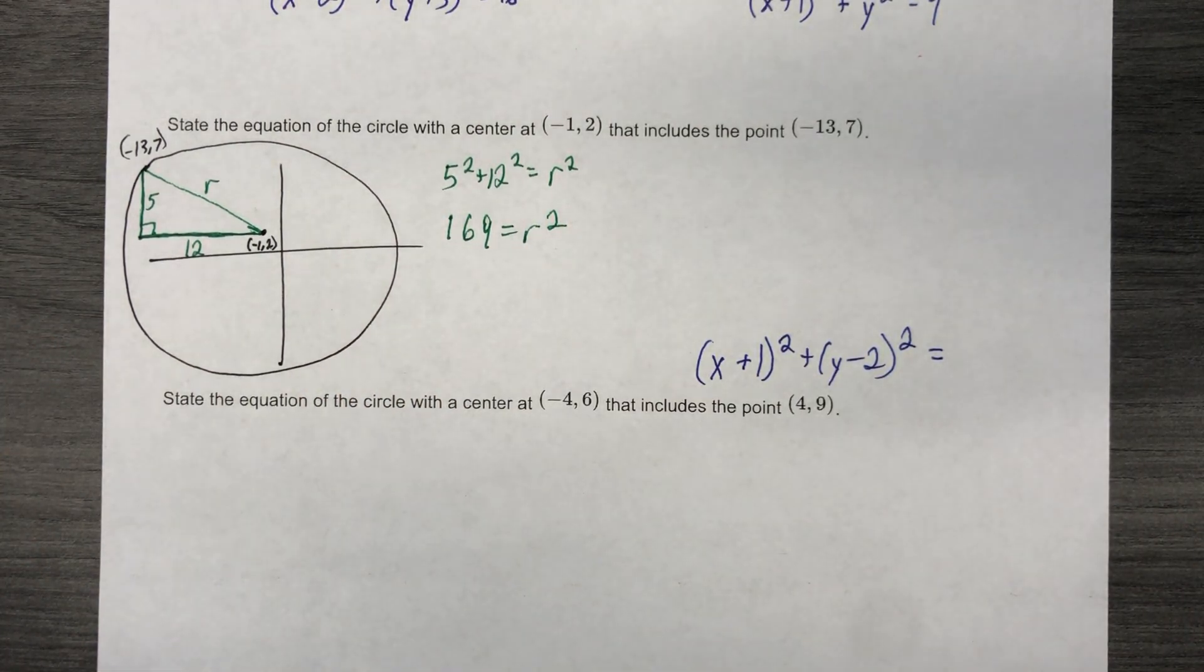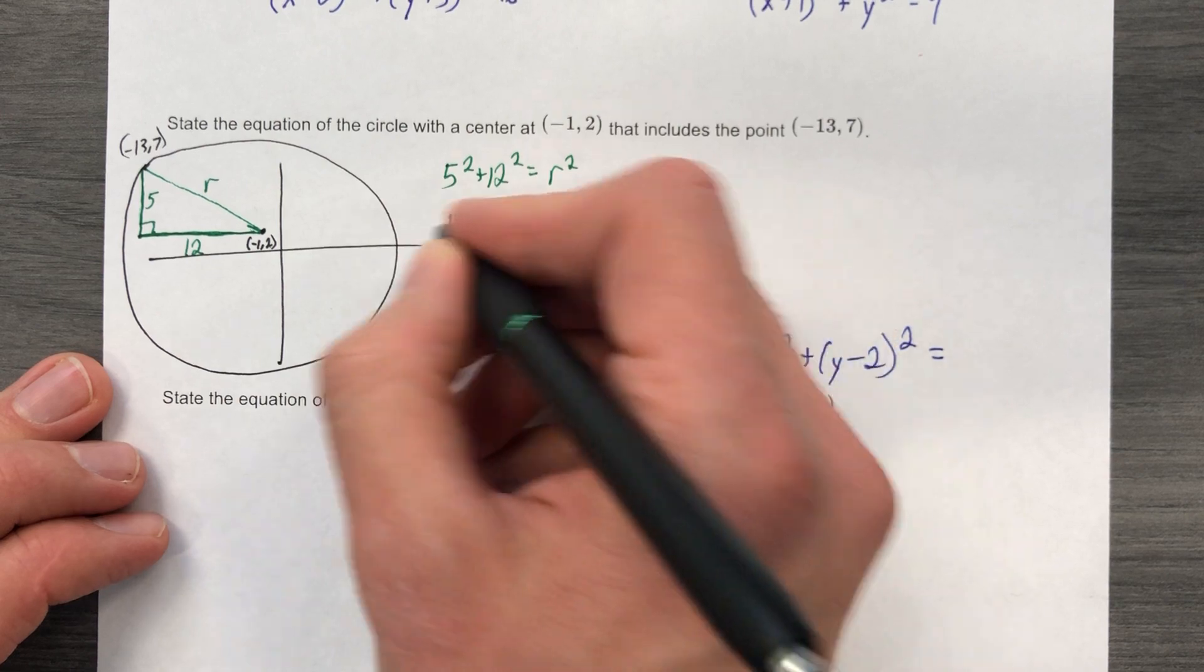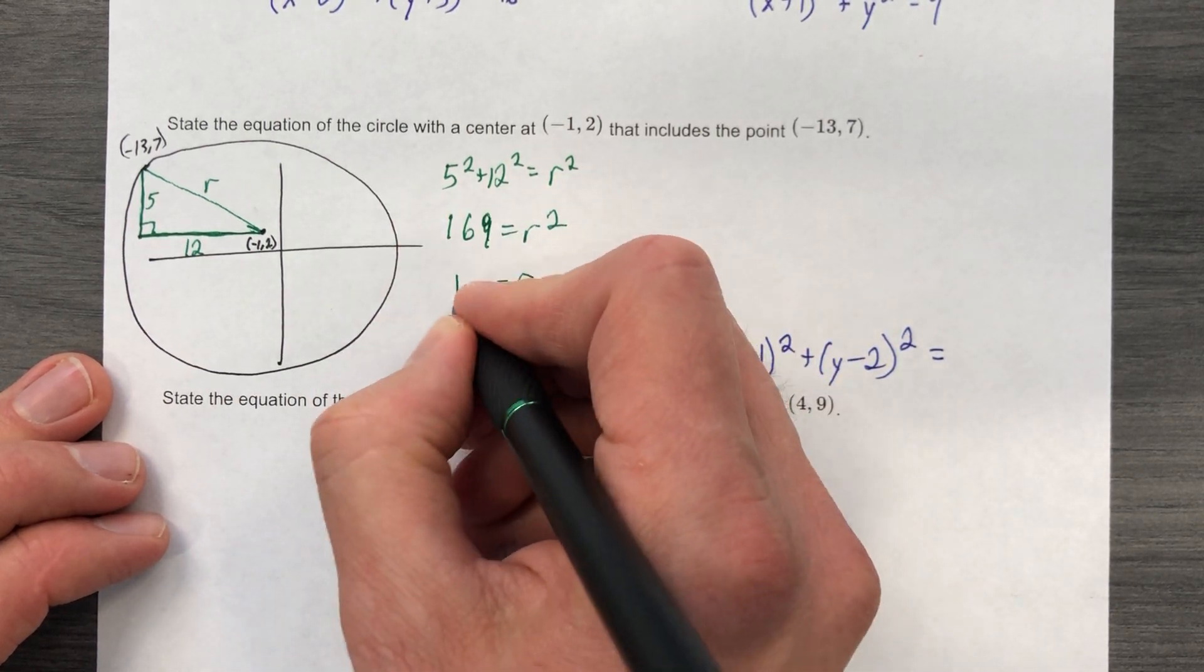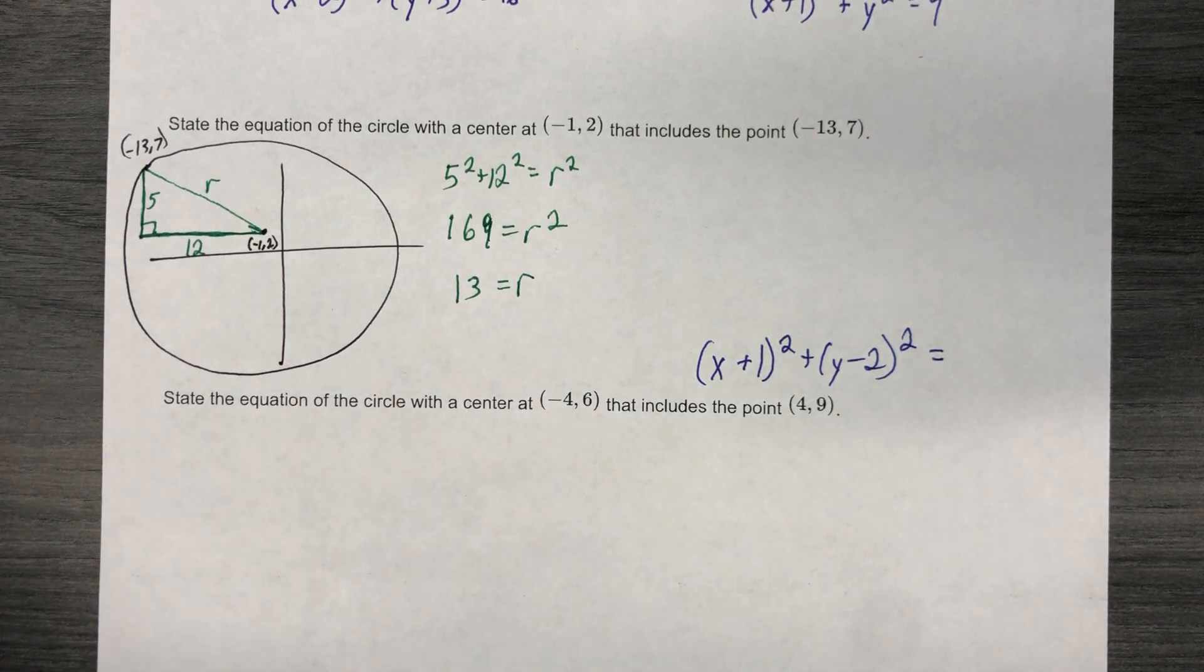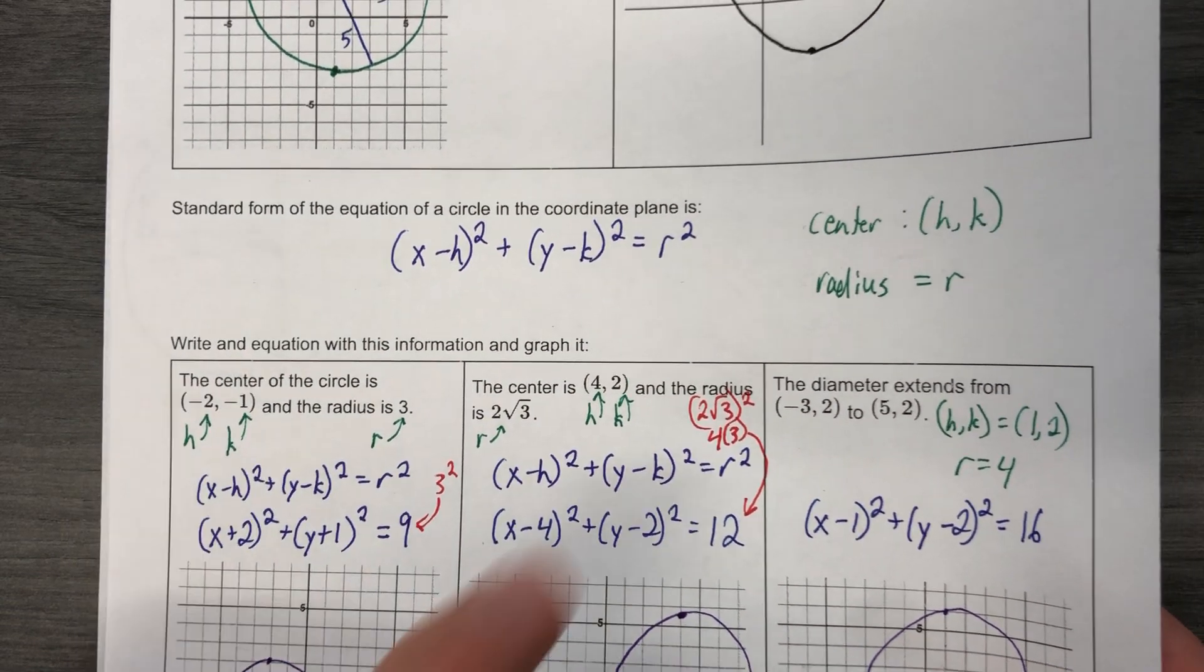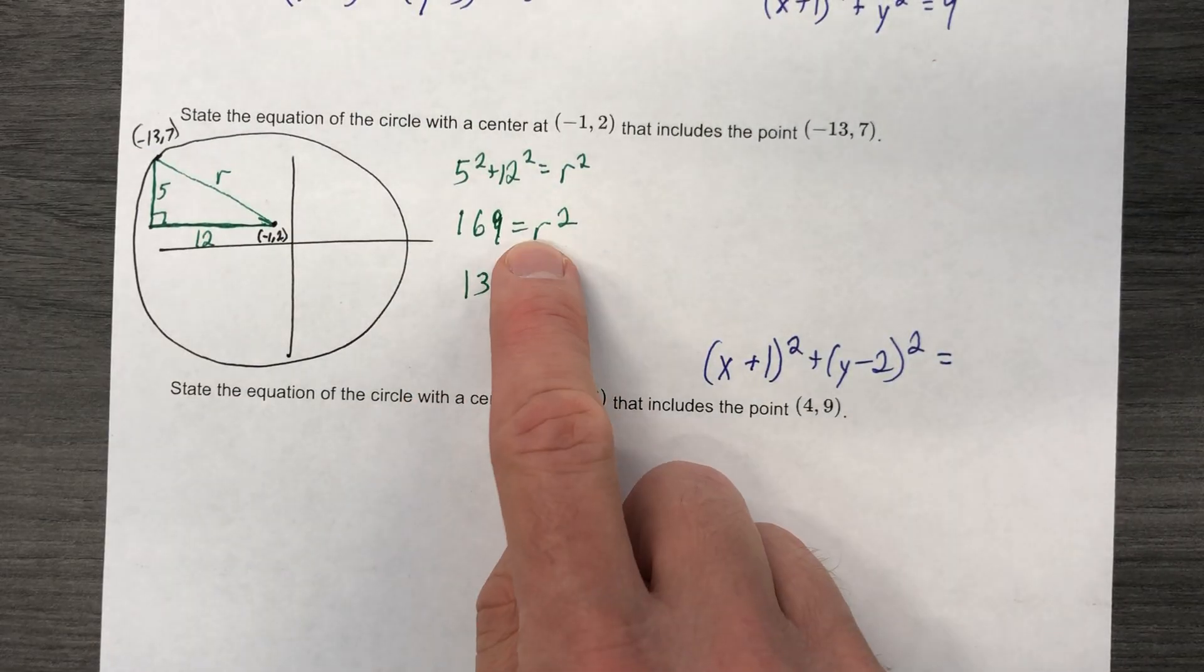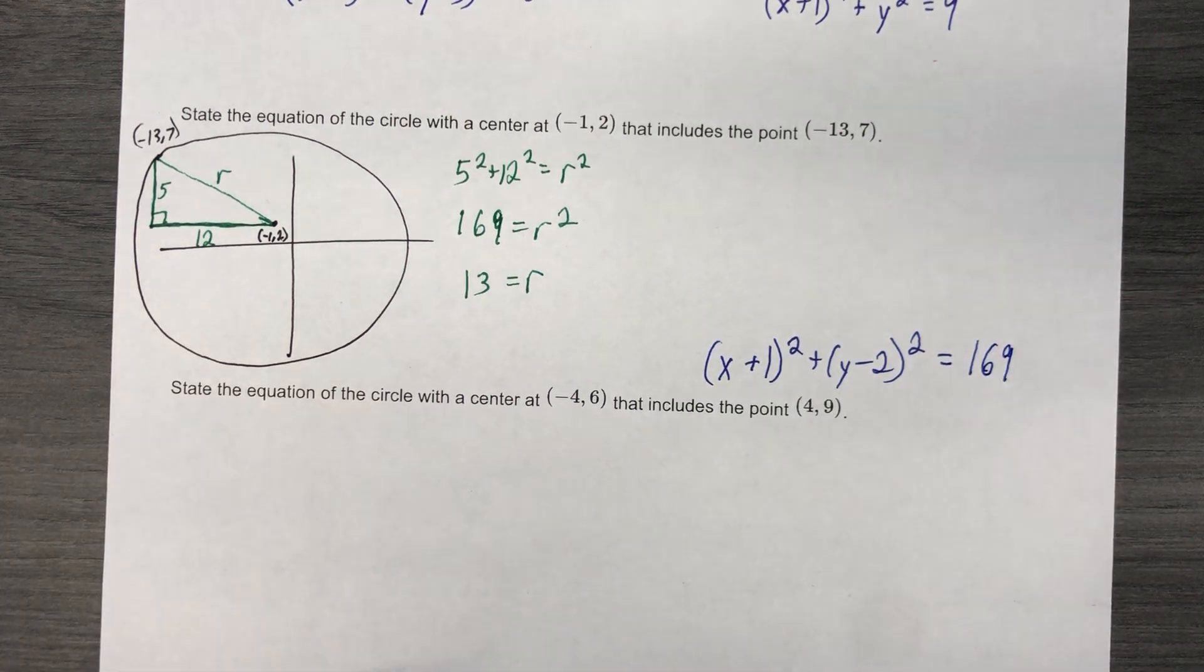Stop here if you like. I recommend that you do. Most people, however, are tempted to square root this and square root this and r equals 13. I agree. You're not wrong. But the formula, front side of the notes, calls for r squared. So why would you find r when they want r squared and you have r squared? So we're done and we found it.